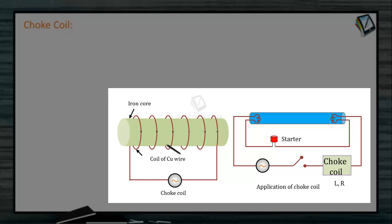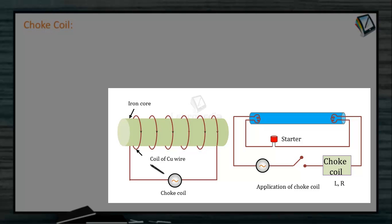Choke coils for different frequencies are made using different substances in their core. For low frequency, L should be large, so an iron-core choke coil is used. For high frequency AC, L should be small, so an air-cored choke coil is used.